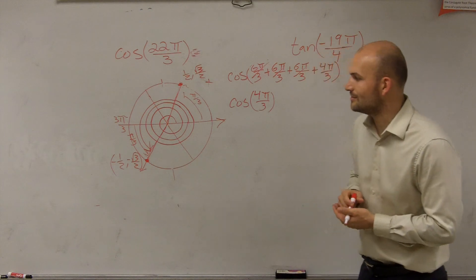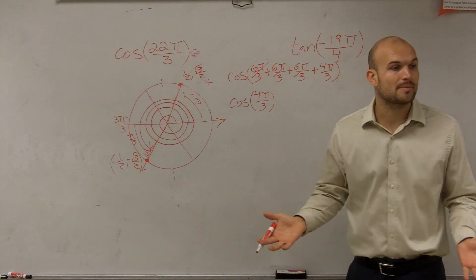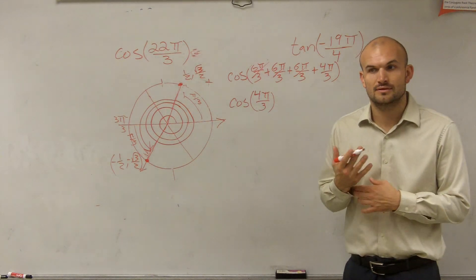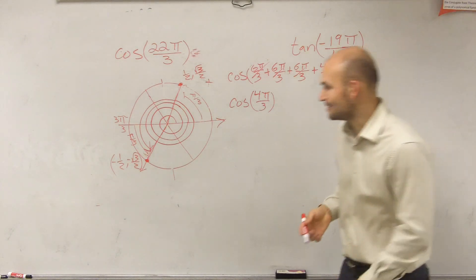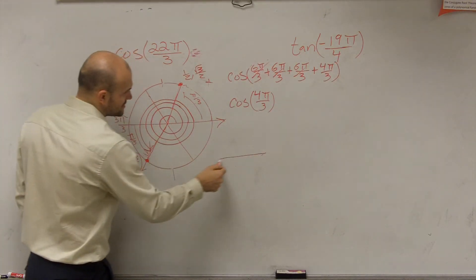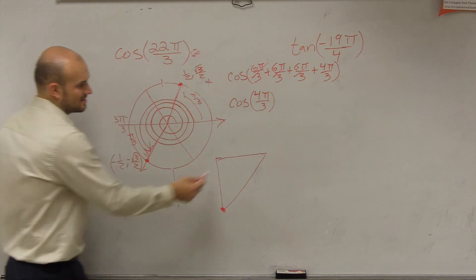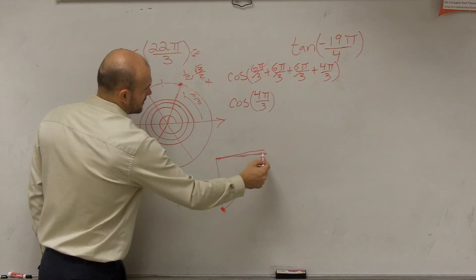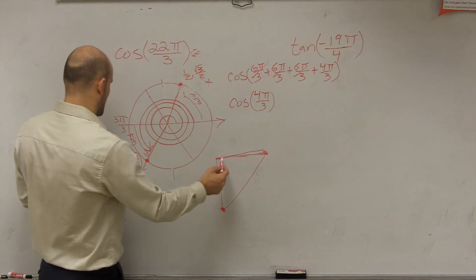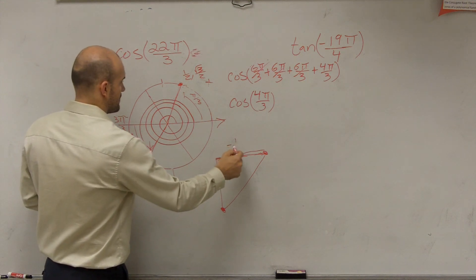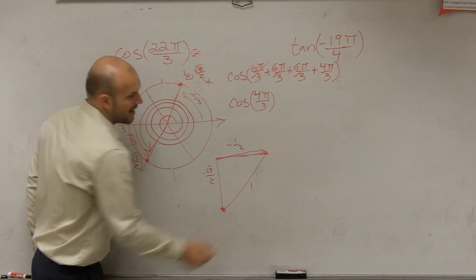So if we know that this point is negative 1/2 comma negative square root of 3 over 2, I say cosine, find the cosine of this. Remember cosine evaluates for the, cosine is the, well let's draw a triangle because I'm seeing some deaf ears. So ladies and gentlemen, here's our angle with the x-axis. Here's your x-axis. Here's the origin. Our point is negative 1/2, negative square root of 3 over 2.